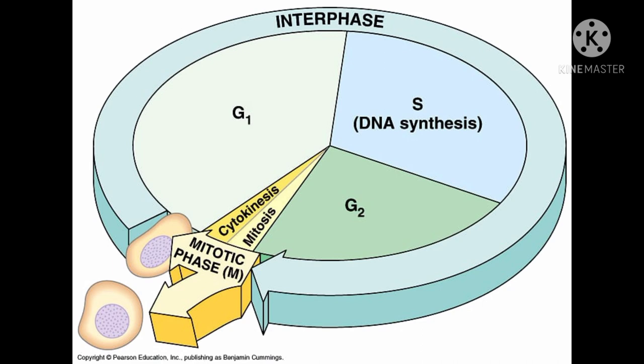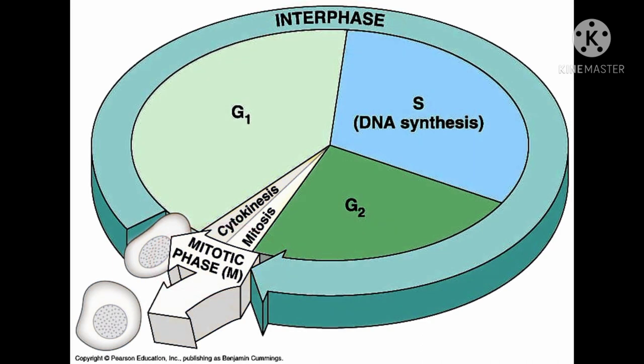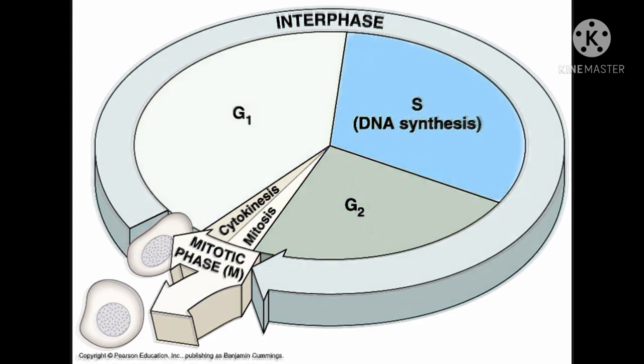The cell cycle consists of two main phases: interphase and the mitotic phase. Cell growth and replication of DNA are the major events of interphase. G1, S, and G2 are the three phases of interphase. The cell grows in all three phases, producing proteins and cytoplasmic organelles. DNA replication only occurs during the S phase.